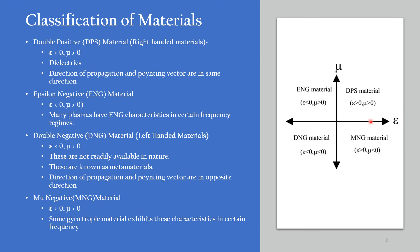This is the classification of materials based on permittivity and permeability. This axis represents the permittivity and this one represents the permeability. The first classification of material is DPS materials, or double positive material. For this, the permittivity and permeability are positive. All the dielectrics belong to this category. For these materials, the direction of propagation and Poynting vectors are in the same direction.